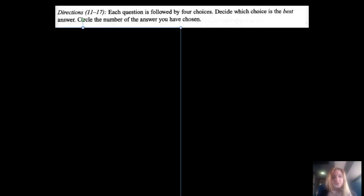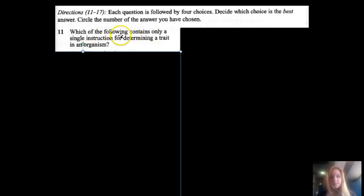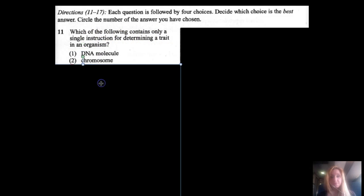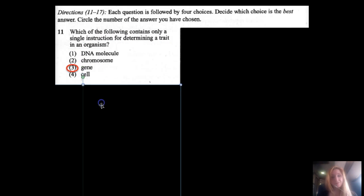We're now on to multiple choice. Directions for 11 through 17: Each question is followed by four choices. Decide which choice is the best answer. Circle the number of your answer you have chosen. I would always ask you guys to mark up your multiple choice questions. Which of the following contains only a single instruction for determining a trait in an organism? DNA molecule, chromosome, gene, or cell. DNA molecule is a long piece of information and contains many instructions for many traits. A chromosome is even more—it's like tons of DNA. A gene is what's for a single trait, and the cell is where you find DNA and chromosomes in the cell's nucleus. So definitely can't be a cell.